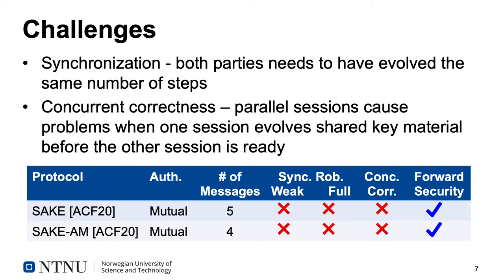In order to overcome the synchronization problem, we propose two fixes. The first fix is more efficient, using a counter to keep track of how many steps the key has been evolved. The other method uses puncturable pseudorandom functions. Puncturable PRFs are computationally efficient, but do require larger key sizes, so they are less efficient in terms of memory, but they also provide stronger security properties.